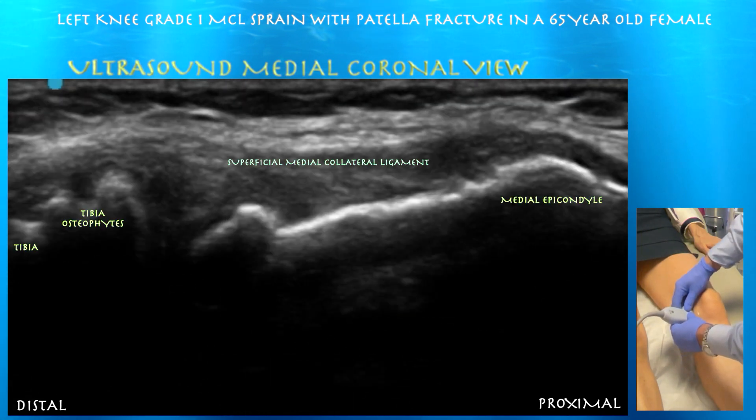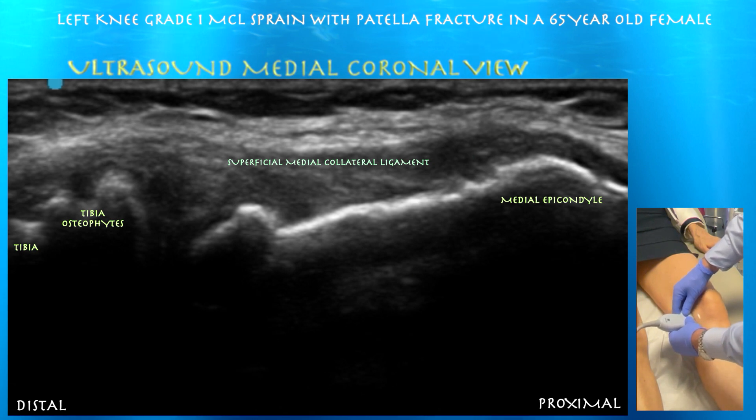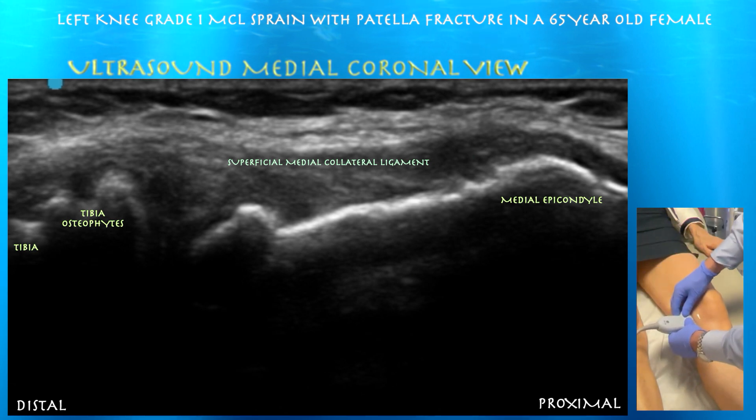Here we can see some hypoechoic signal at the proximal aspect of the MCL, consistent with a low-grade sprain. You can tell there is some thickening.